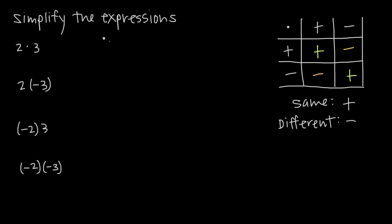Applying this logic to the expressions we've been given: we have 2 times 3 — both positive numbers. Positive 2 times positive 3: the signs are the same, both positive, so our result is positive 6. Then we have positive 2 times negative 3 — a positive and a negative, different signs — so the result is negative 6.